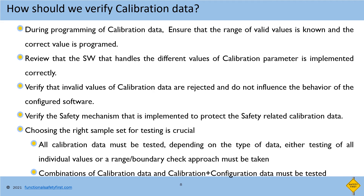How should we verify calibration data? There are different methods of verification that include both static verification via reviews and dynamic testing. For static verification: first, it must be ensured that during programming at end of line, the valid calibration data values are known and the value to be programmed is decided correctly. Second, we must ensure that the software handling the different values of calibration parameters has been implemented correctly, invalid values are rejected, and incorrect values should not influence the behavior of the configured software. The safety mechanism implemented to protect calibration data must be reviewed as well as tested at different levels such as unit testing, integration testing, and functional testing.